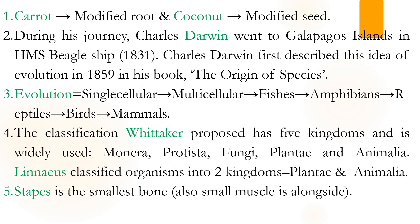Carrot is a modified root. Coconut is a modified seed — such questions come up. Charles Darwin was associated with the Galapagos Islands in Latin America. His ship's name was HMS Beagle, and he travelled in 1831. HMS stands for His or Her Majesty's Ship. He properly put forward the theory of evolution, and his most famous book is The Origin of Species.